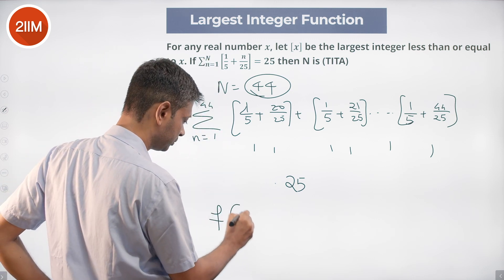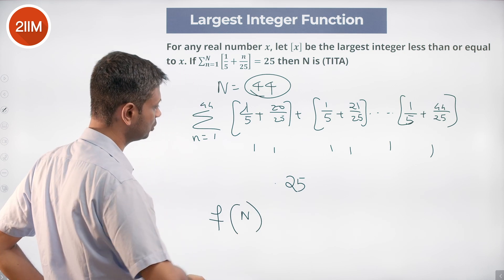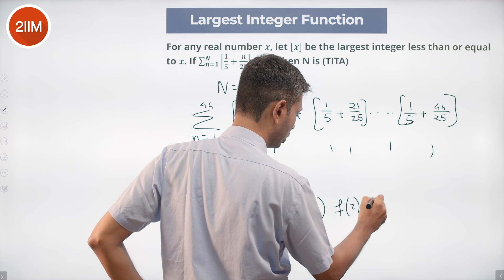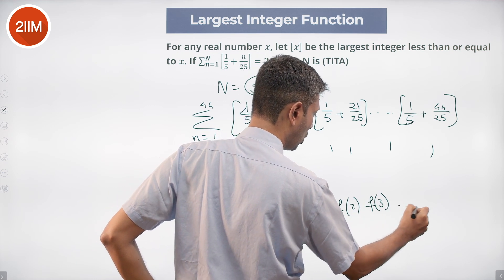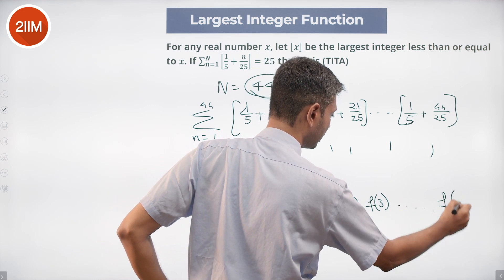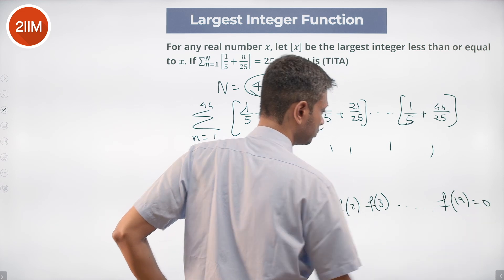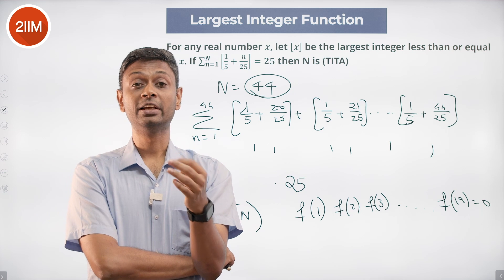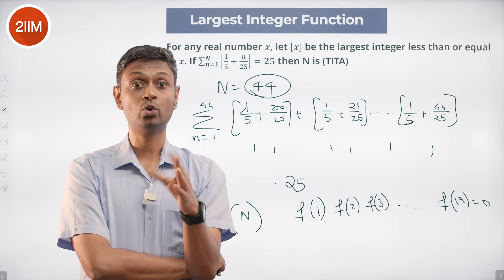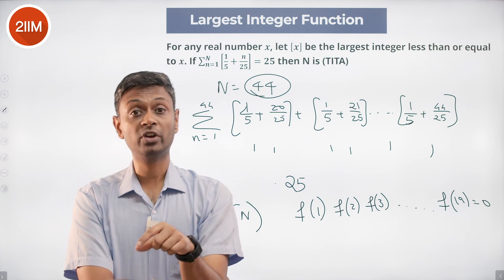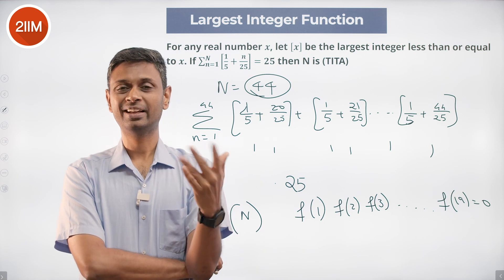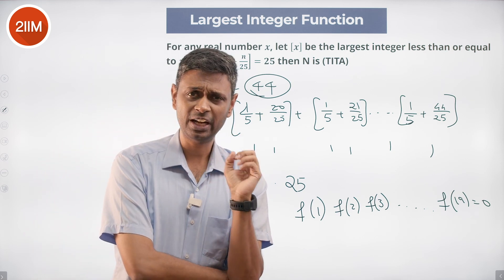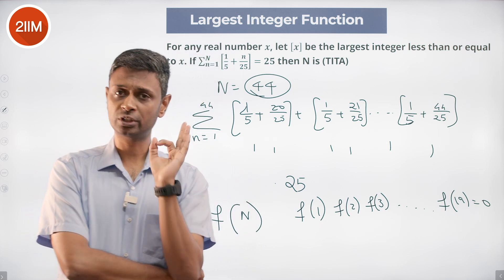Let's call this F(n). F(1) through F(19) would be 0, F(20) would be 1, F(21) would be 2 cumulative, F(22) would be 3, all the way to F(44) would be 25. F(45) would jump by 2. It becomes 25 when N is 44. The greatest integer function is a beautiful function.